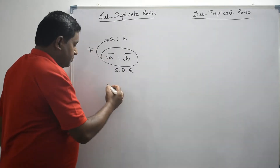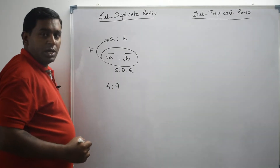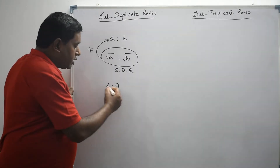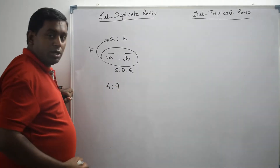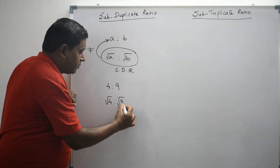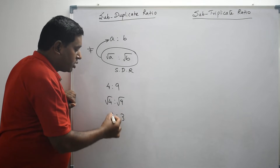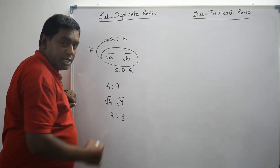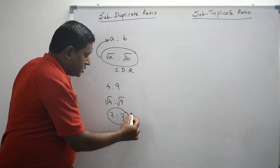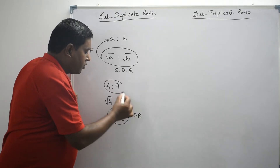Let's look at an example. Let's consider the ratio 4 is to 9. I want to find subduplicate ratio of 4 is to 9. What I have to do is I have to take square root for both 4 and 9. The square root of 4 is to square root of 9 — I get 2 is to 3. The value of square root of 4 is 2, and the value of square root of 9 is 3. So 2 is to 3 is the subduplicate ratio of 4 is to 9.